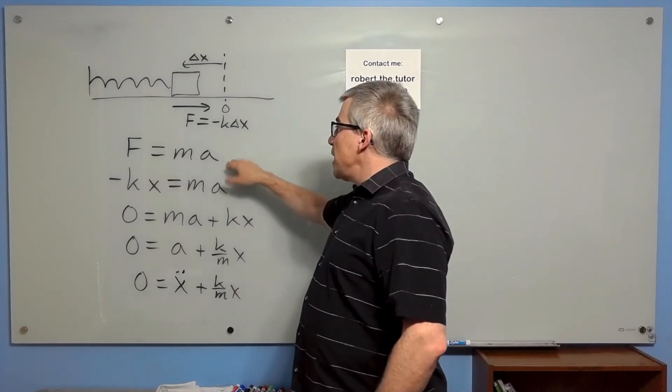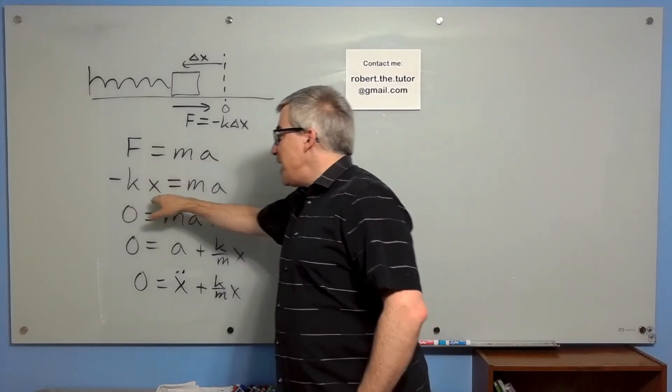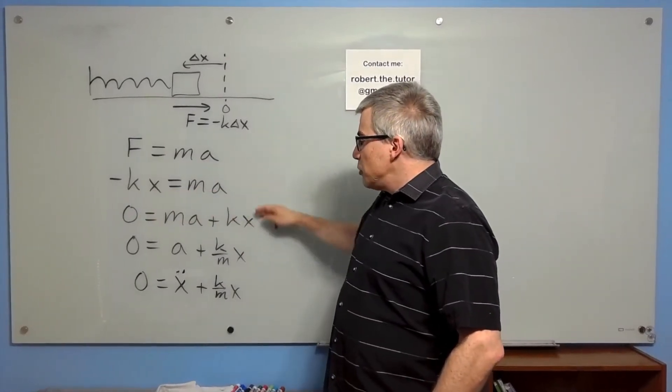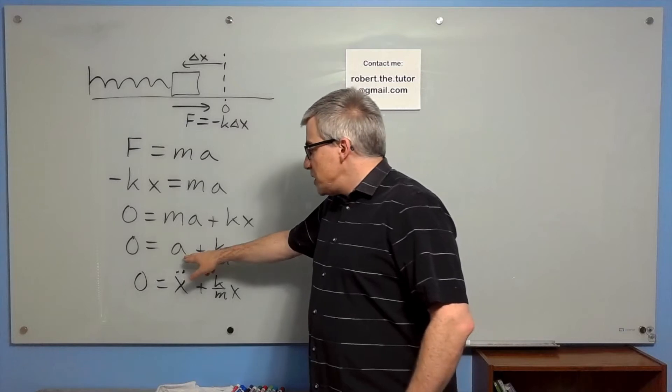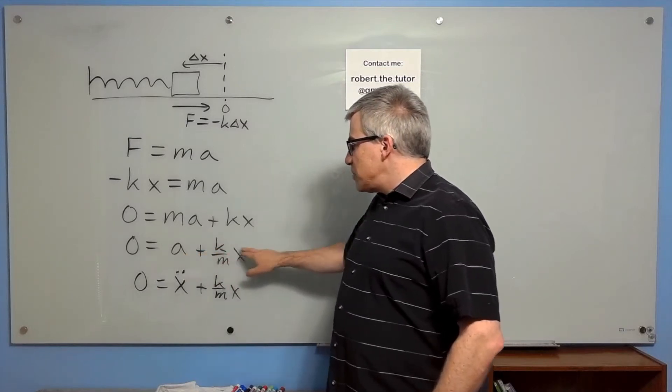So using F equals ma, we plug in minus kx equals ma. And rearranging it, we get zero is acceleration plus k over m times position.